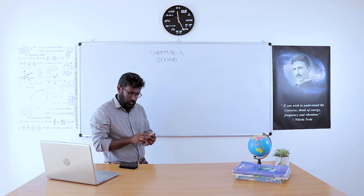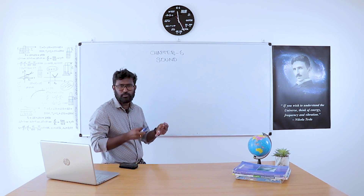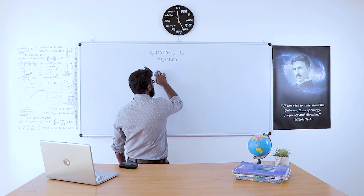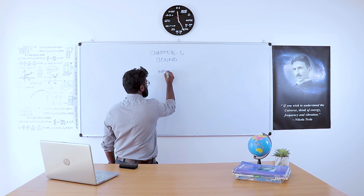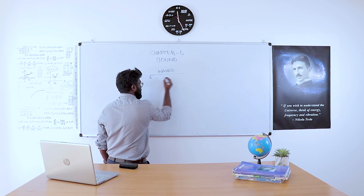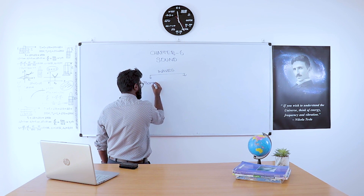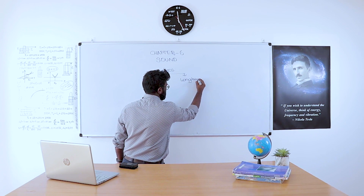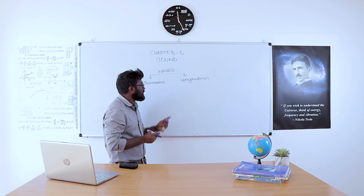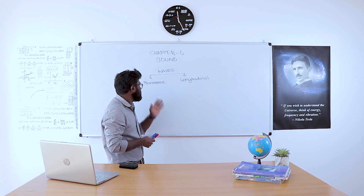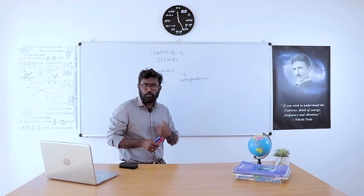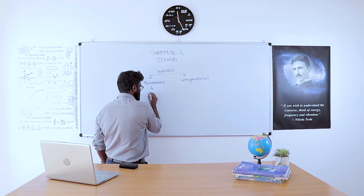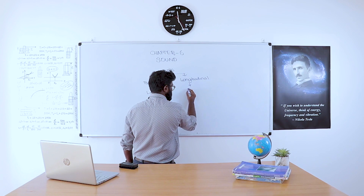Now, sound falls into which category of wave? Waves are classified into two types: transverse wave and longitudinal wave. The example of a transverse wave is light, and the example of a longitudinal wave is sound.